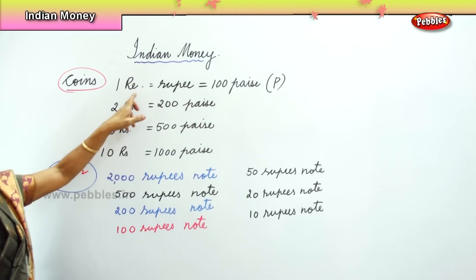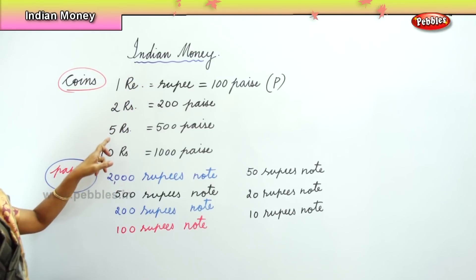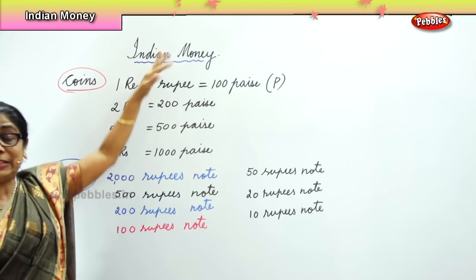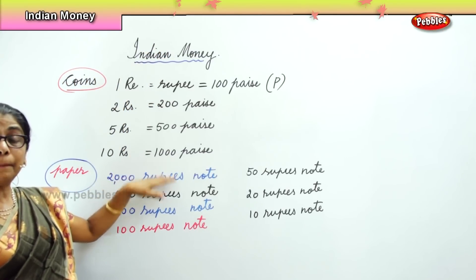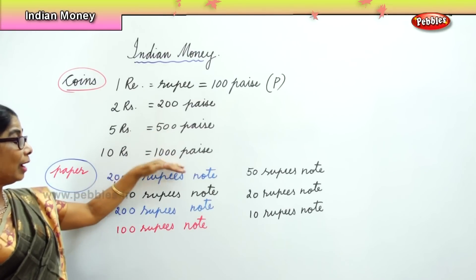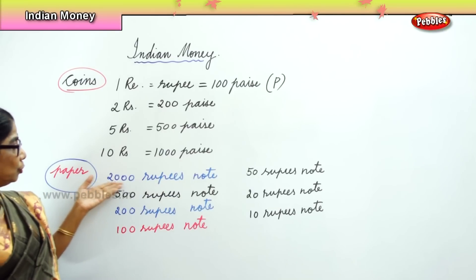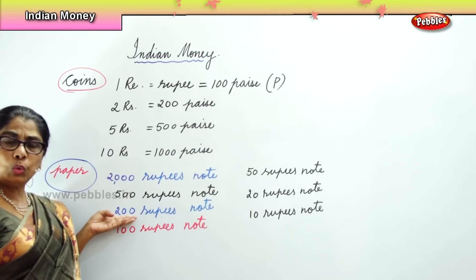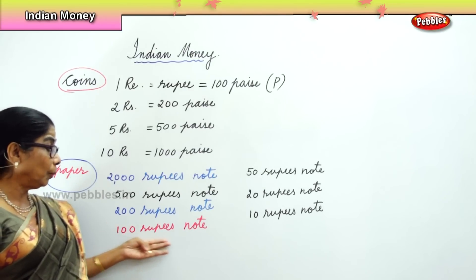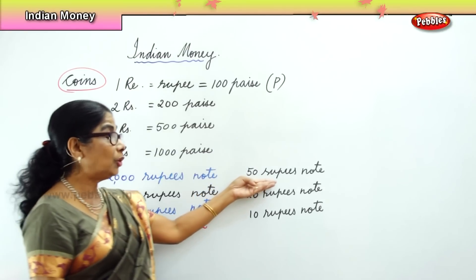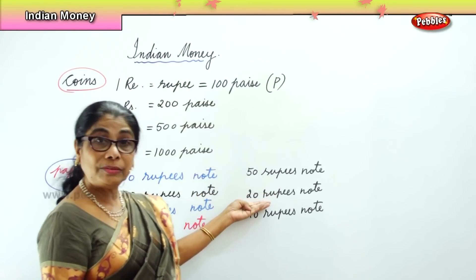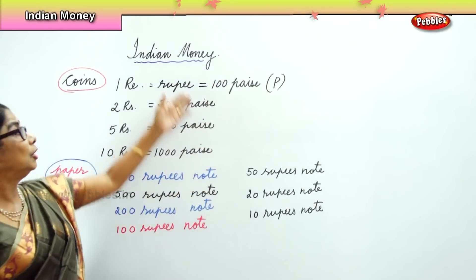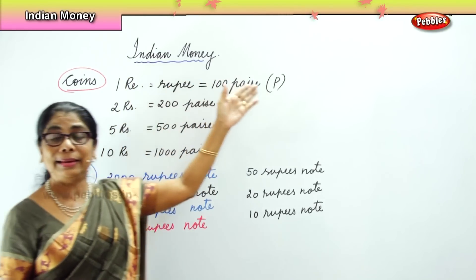We have coins: 1 rupee, 2 rupees, 5 rupees and 10 rupees. These are the Indian currency. And you have the notes in different colors: 2000 in red, 500 in green, 200 rupee note in orange, 100 rupees in purple, 50 rupees in blue, 20 rupees in red, and 10 rupees in brown. So we have coins and paper money in Indian currency.